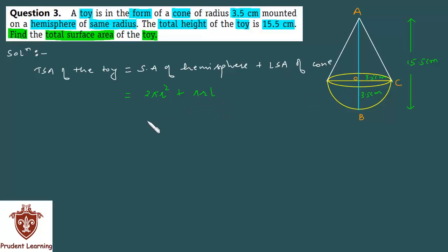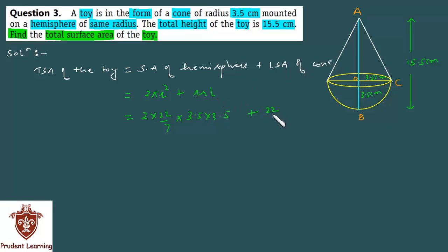Since the radius is the same, substituting the values: 2 × (22/7) × (3.5)² + (22/7) × 3.5 × l, where l is the slant height AC of the cone.